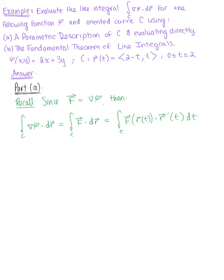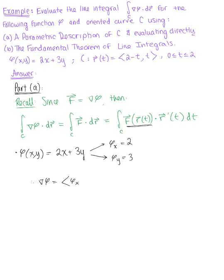The first thing we need to do is find the parametrization of our vector field. We are given the potential function phi of xy equal to 2x plus 3y. Taking partial derivatives: the partial of phi with respect to x is 2, and the partial with respect to y is 3. Therefore, the gradient of phi is the vector (2, 3). Since this is a conservative vector field, our vector field f equals the gradient of phi, so f is simply (2, 3).